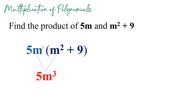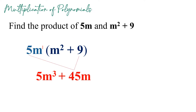For the other term, let's multiply 5m to 9. Since 9 has no variable, we just multiply 5 and 9, then copy the variable m. So 5 times 9 gives us positive 45m. That will be our final answer.